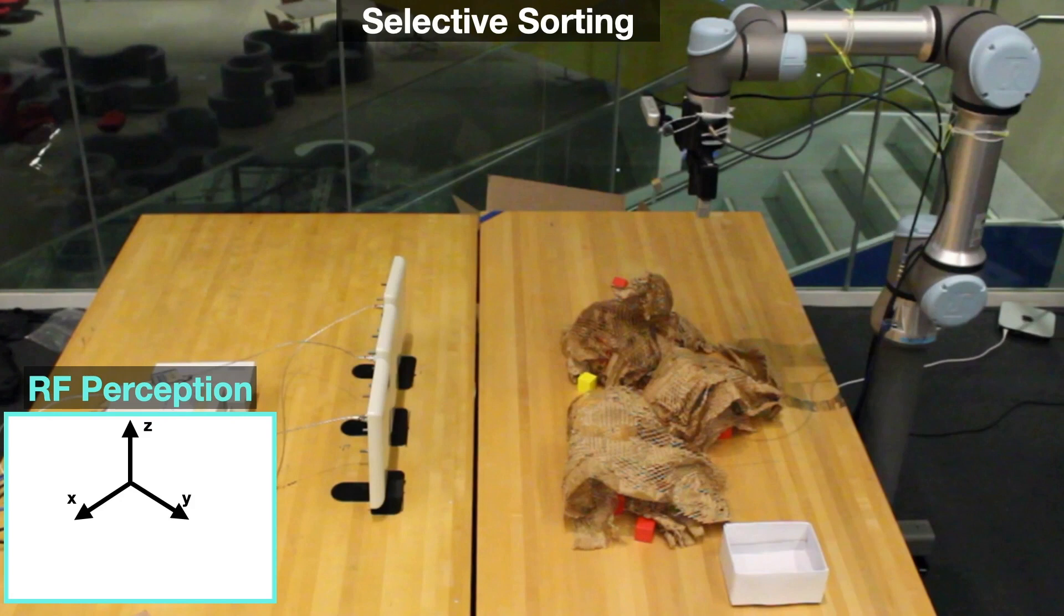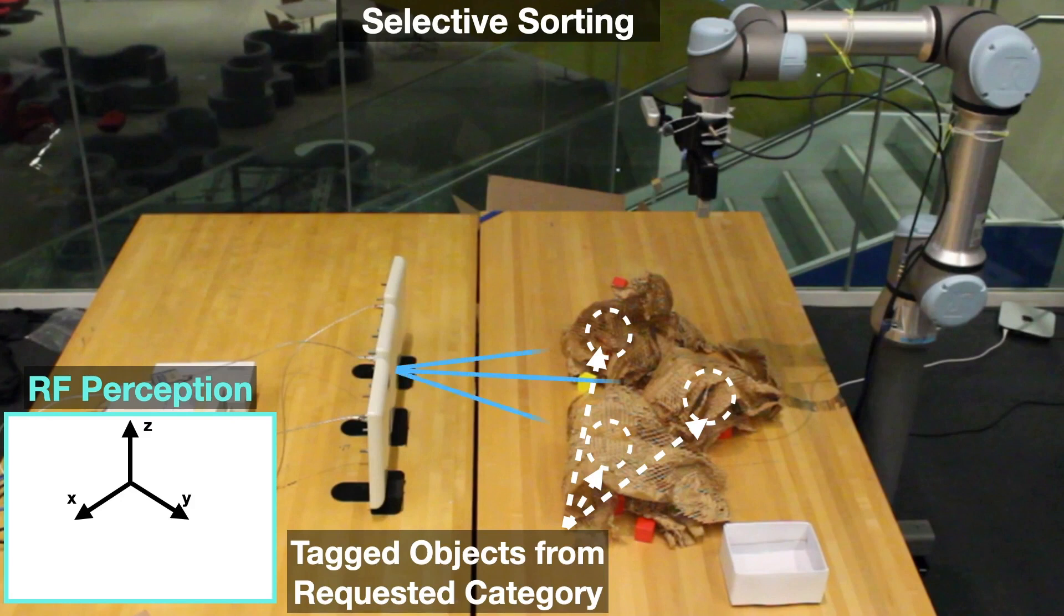RFgrasp can perform more complex tasks like selective sorting. Here it needs to identify and locate all objects that belong to a certain semantic class and put them in the sorting bin. Using RF perception, it knows where all the objects are located and follows similar steps to extract each object.